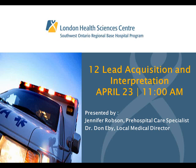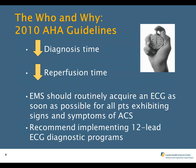The pre-hospital 12-lead ECG is one of the fastest growing advances in pre-hospital care in North America. Looking at the 2010 American Heart Association guidelines, they mention four specific things: 12-lead ECGs speed up the time for diagnosis; 12-lead ECGs shorten the time to reperfusion for both pharmacological and mechanical treatments; EMS should routinely acquire ECGs as soon as possible for patients exhibiting signs and symptoms of acute coronary syndromes; and the implementation of 12-lead ECG diagnostic programs with associated medically directed quality assurance programs such as STEMI bypass.